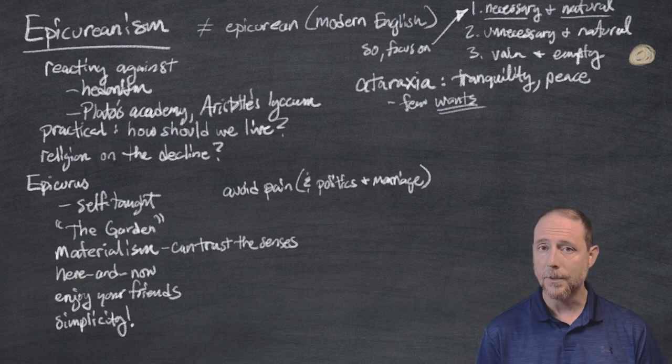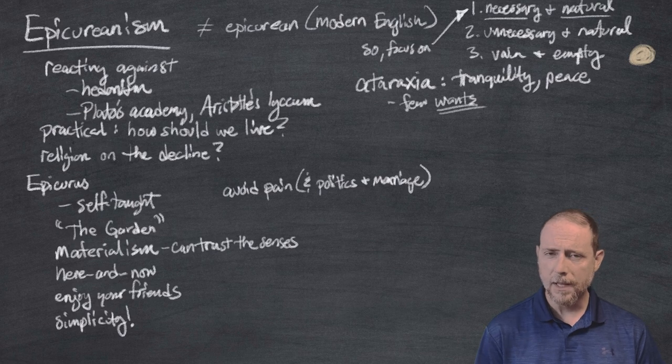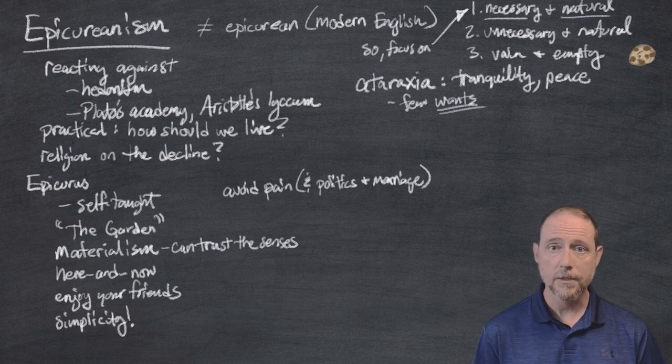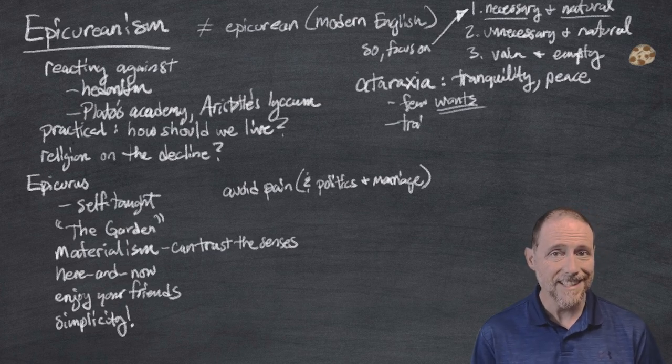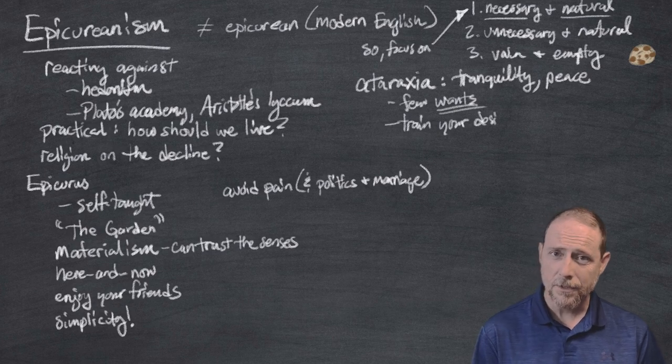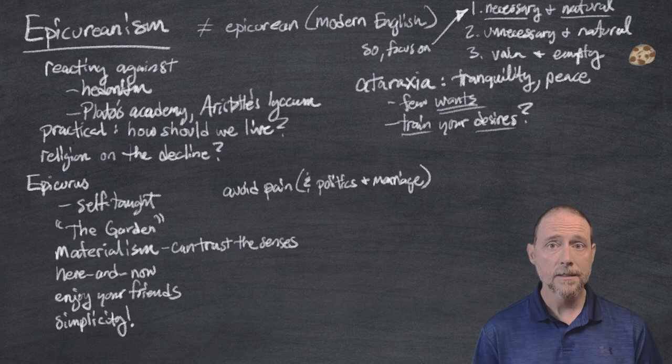But when it comes to limiting your wants, think about that for a minute. How do you limit your wants? If I go by a bakery that has just baked bread or cookies, do I control wanting a cookie or wanting bread? That's not as easy. Training your desires, is that something that we can do? Can we actually train to attenuate or limit or eliminate desires? It's not obvious.